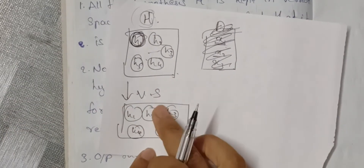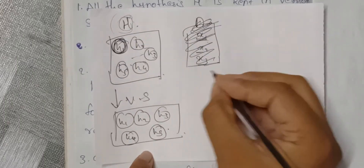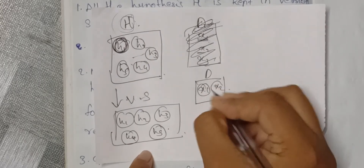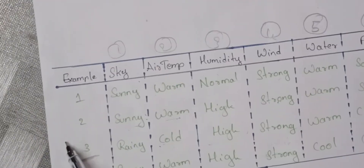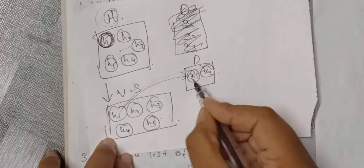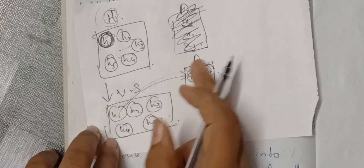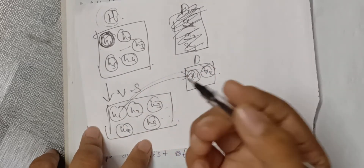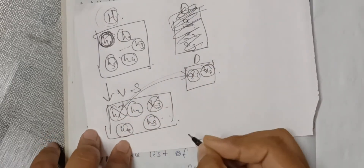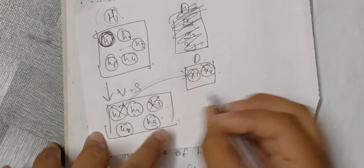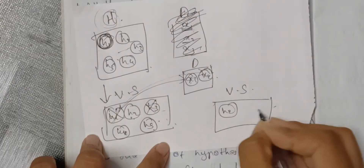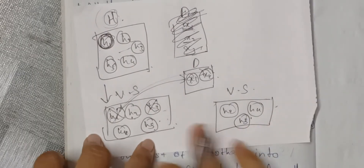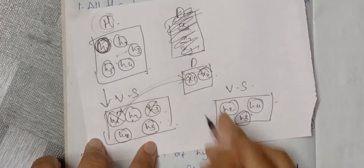We check the training examples X1, X2 and so on against the hypotheses H1, H2, H3, H4, H5. After checking all training examples, we apply list-then-eliminate: hypotheses that are inconsistent are removed. For example, after checking, we may find that H2, H4, and H5 remain in the version space.